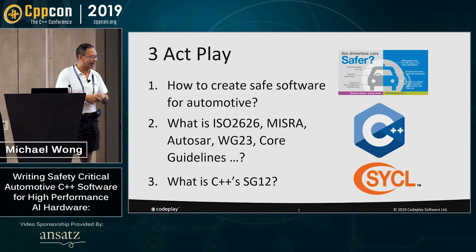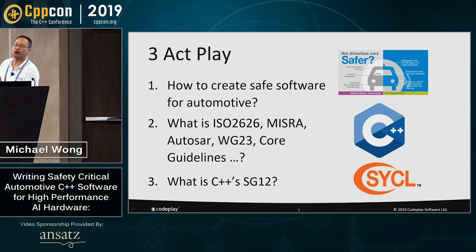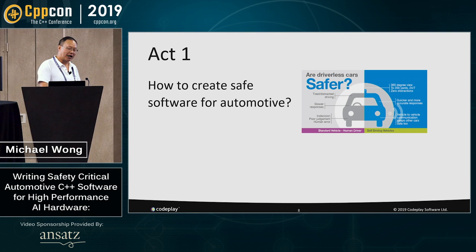I'm going to talk a little bit about SG12, the C++ vulnerabilities group, which has been additionally branded as a safety critical group as well, because that's some of the things they are doing. So, act one — how do you create safe software for automotive?